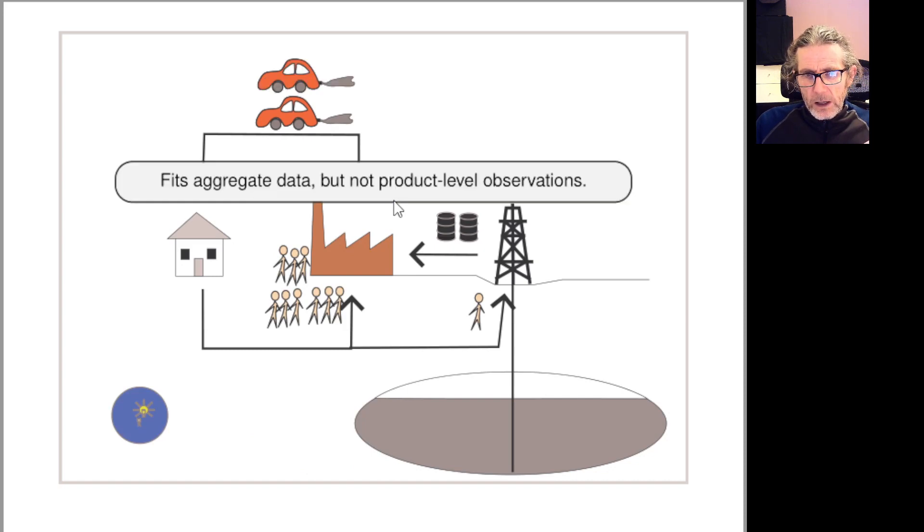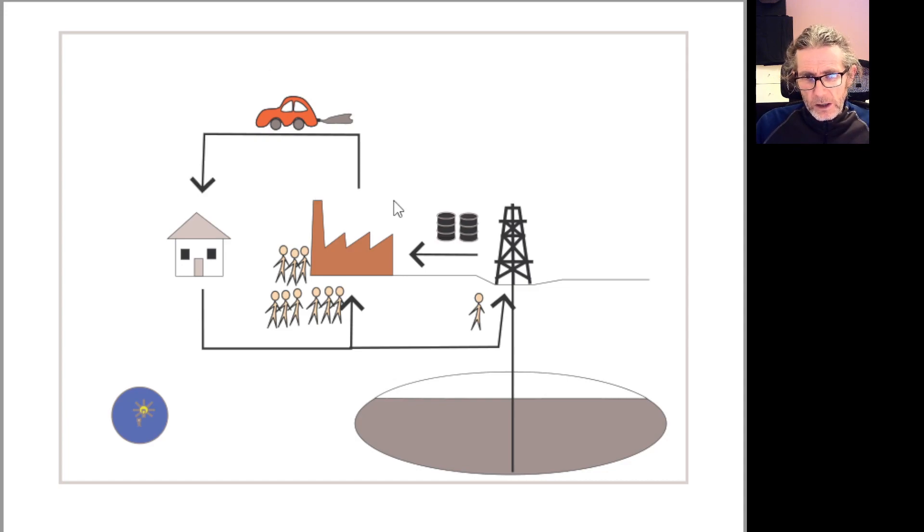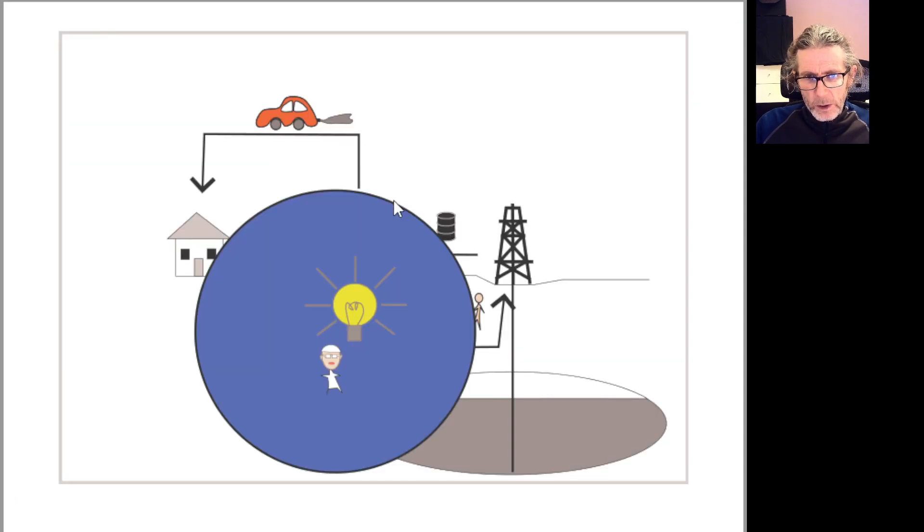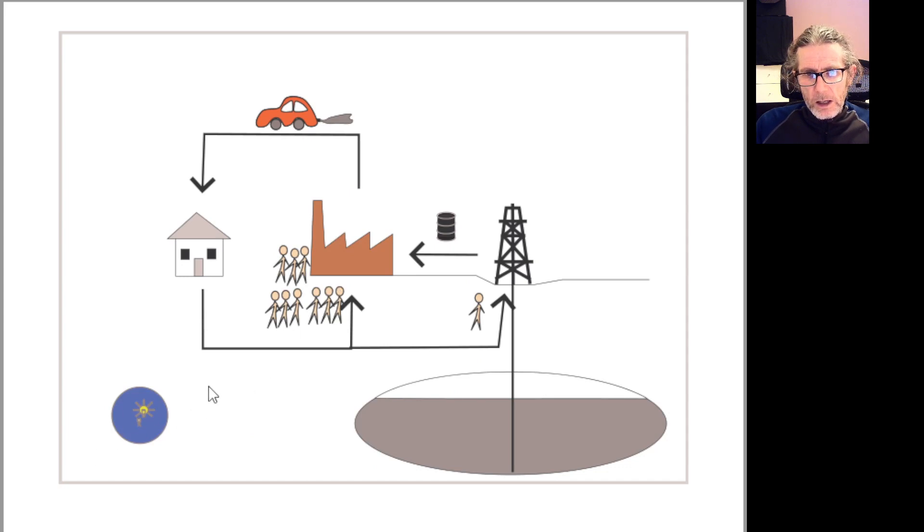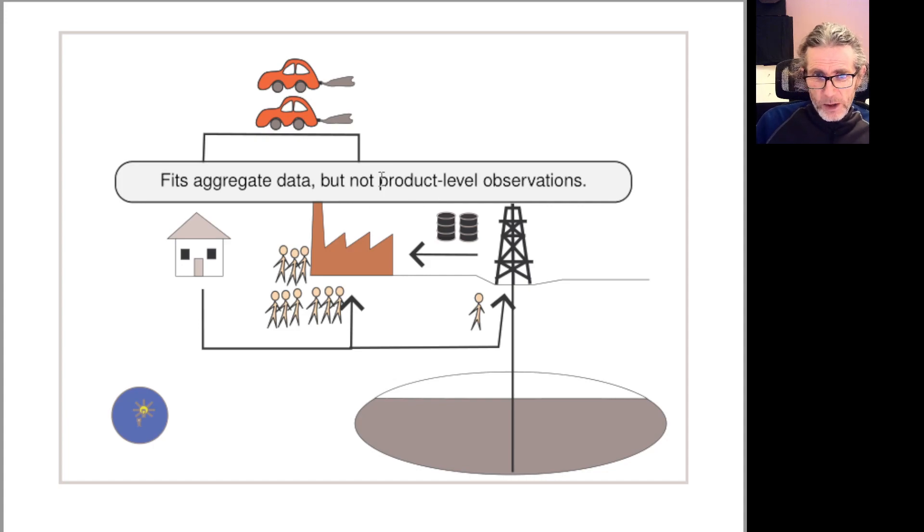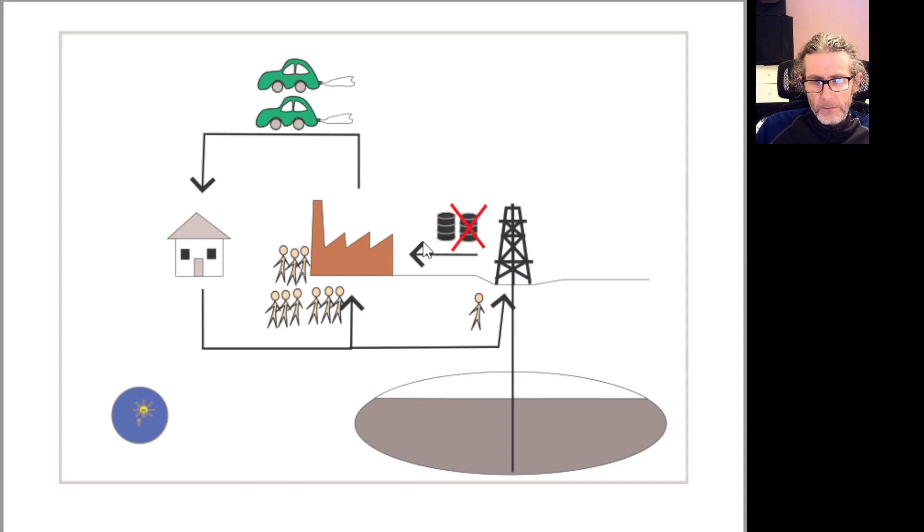Here's the base situation. We do some research and productivity of this guy has doubled, productivity of this guy has doubled. So this guy working for a year can produce two barrels of water, and these guys can produce two cars. This all fits the aggregate data, but not the product level observation, which is that cars have got hugely more efficient, so we shouldn't need all this oil. But now we don't fit the aggregate data which shows that oil consumption has gone up.